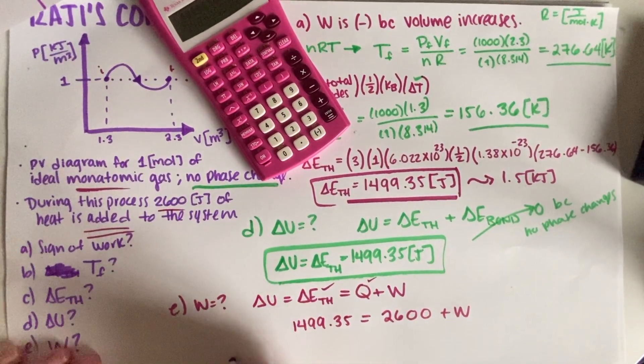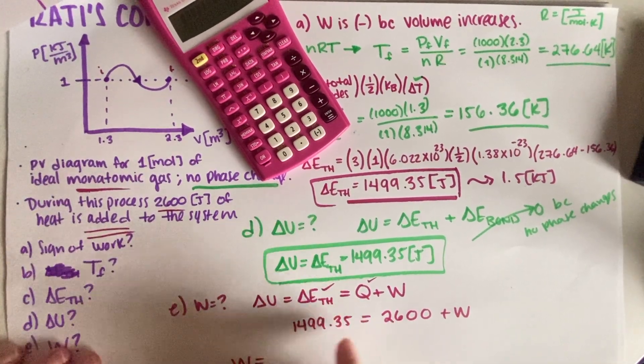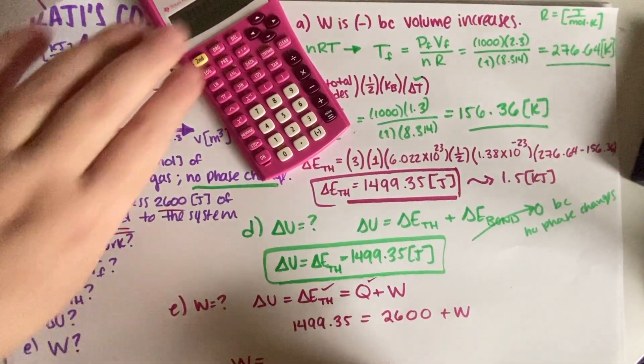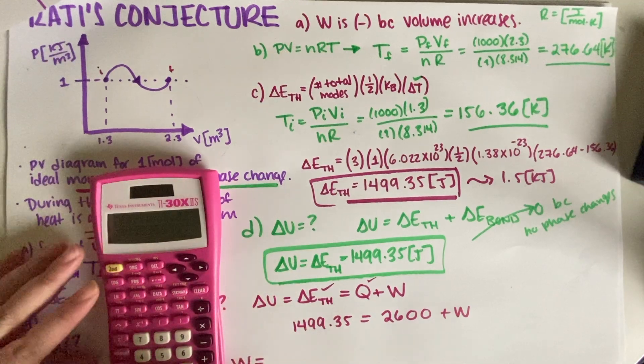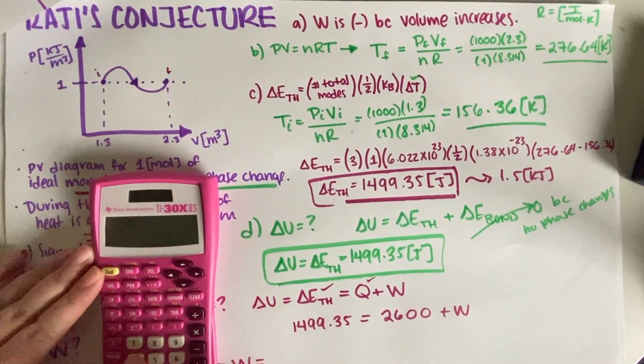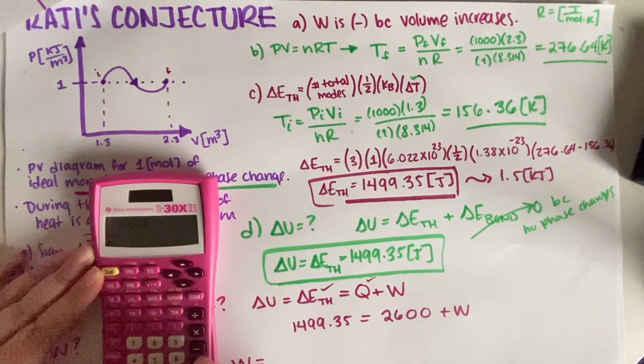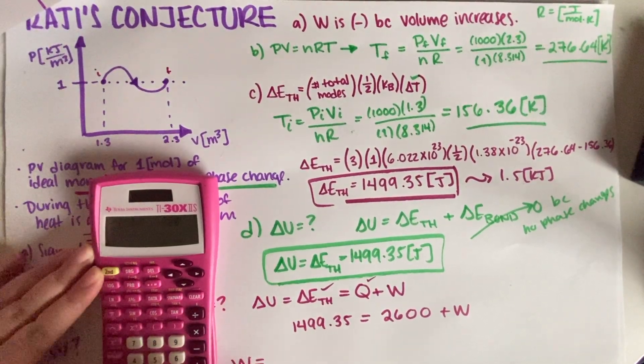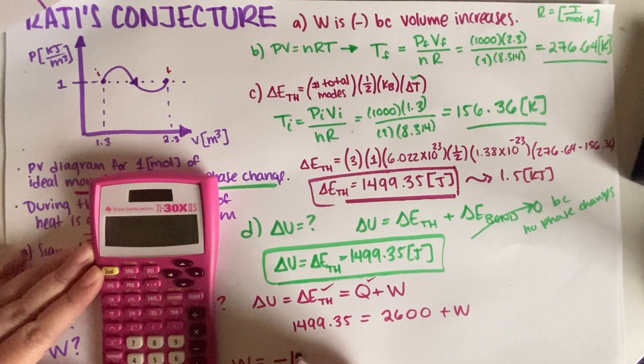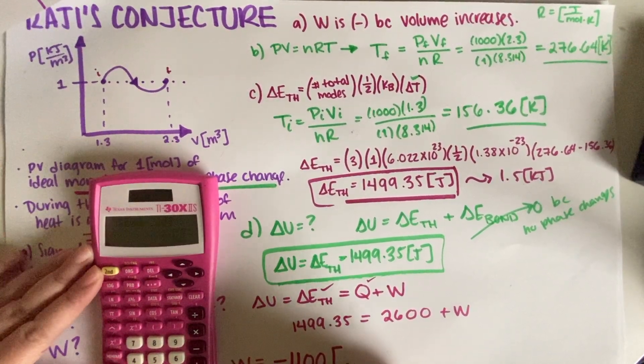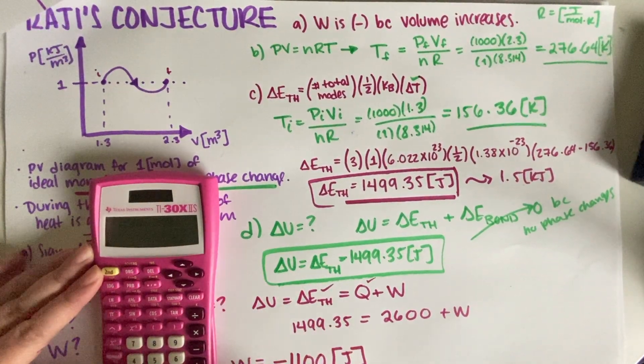So this is 1499.35 is equal to 2600 plus W, which means that W is just the subtraction of these two. So that's going to be, I'm just going to do 1500, 1500 minus 2600, that is equal to negative 1100 joules final answer.